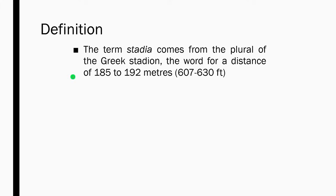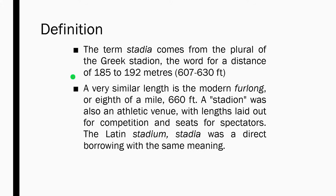Another term used here is the word Stadia, which comes from the plural of the Greek word Stadion — the word for a distance of 185 to 190 meters or 607 to 630 feet. A very similar length is the modern furlong, or 1/8 of a mile, which is 660 feet. Stadion was also an athletic venue with lengths laid out for competition and seats for spectators. The Latin Stadium was a direct borrowing with the same meaning.